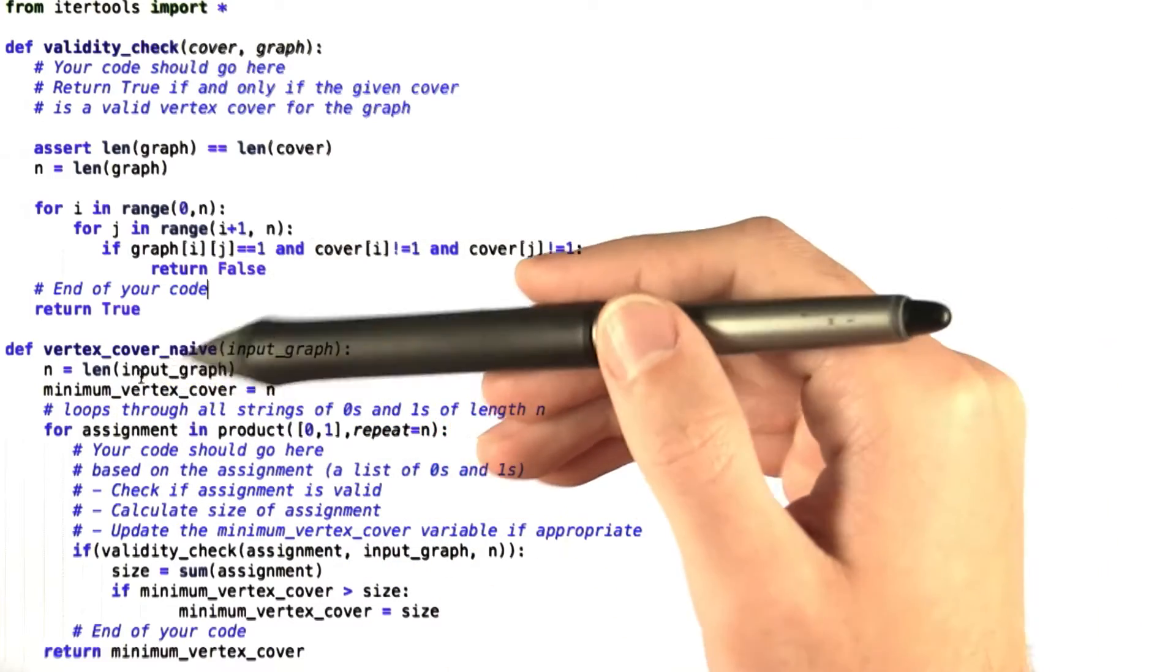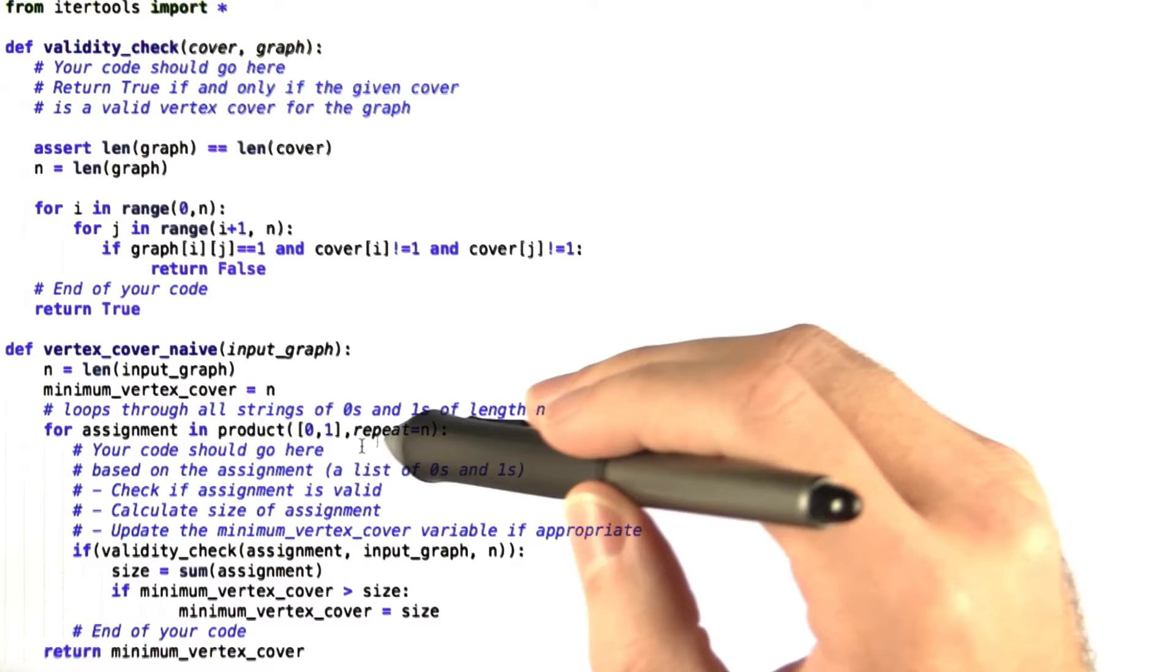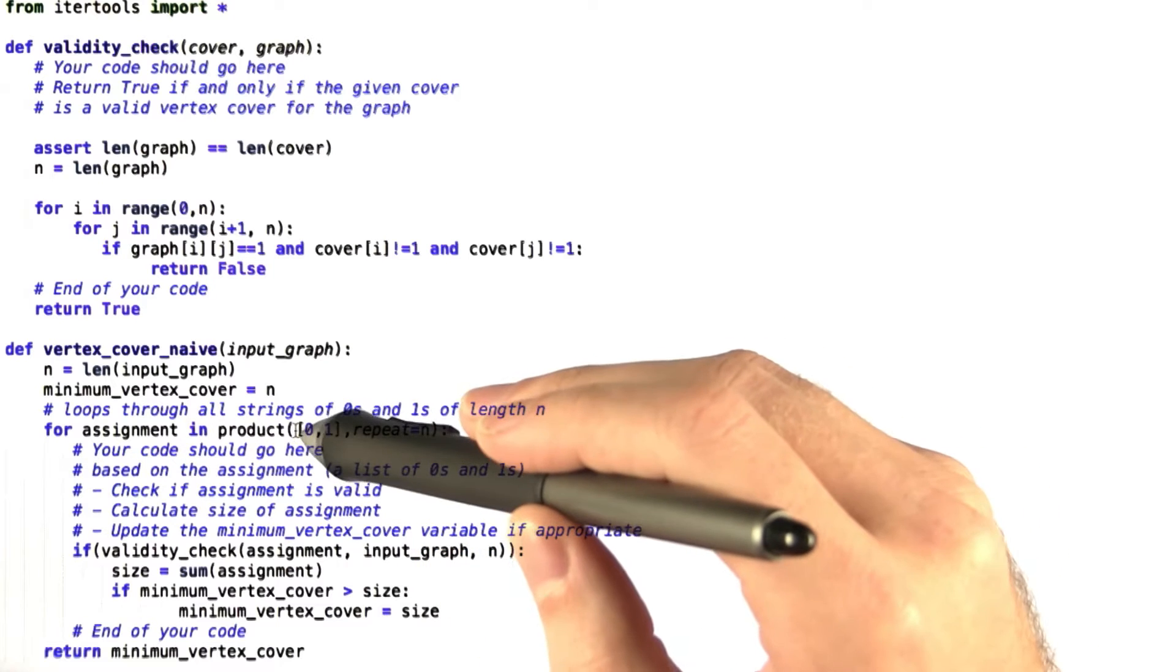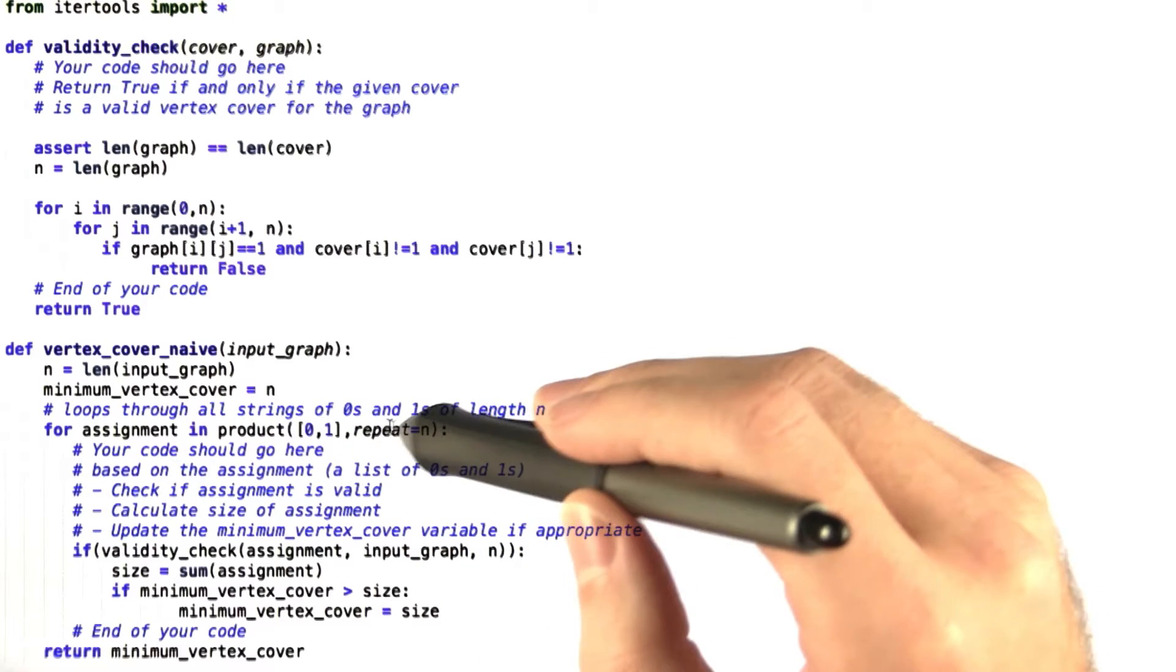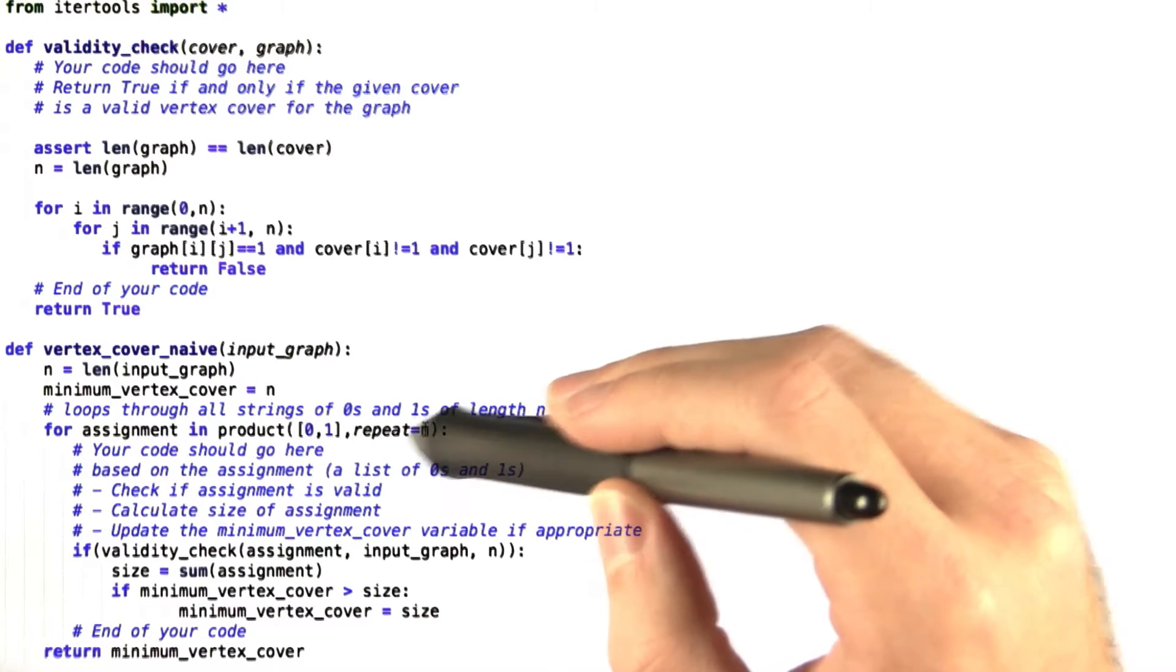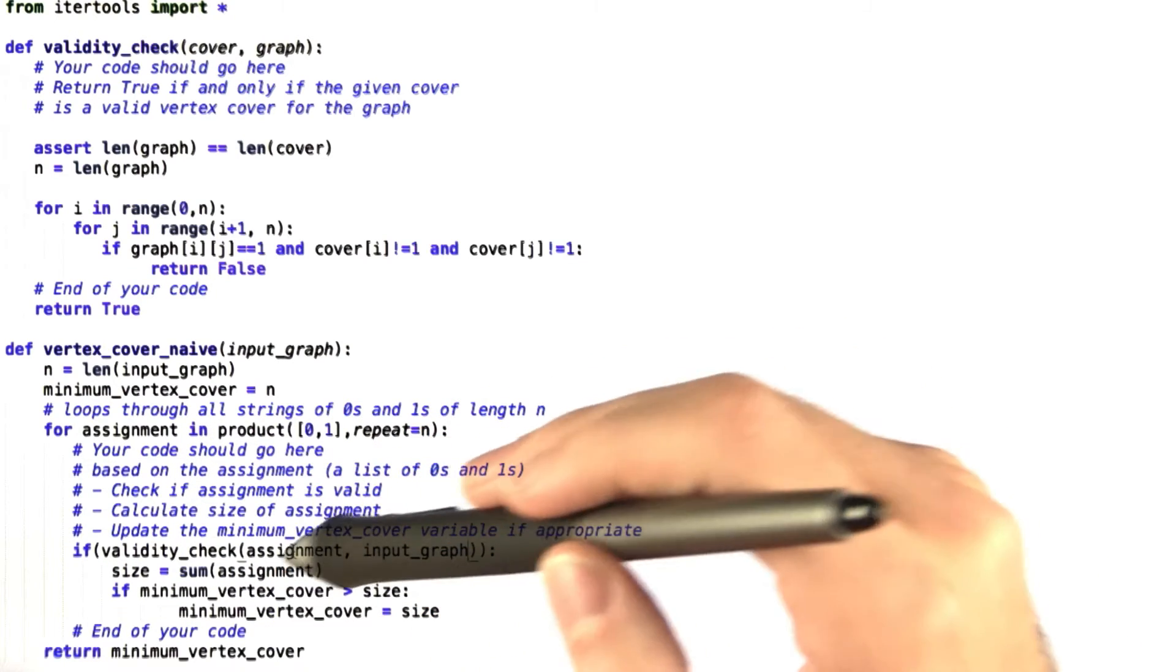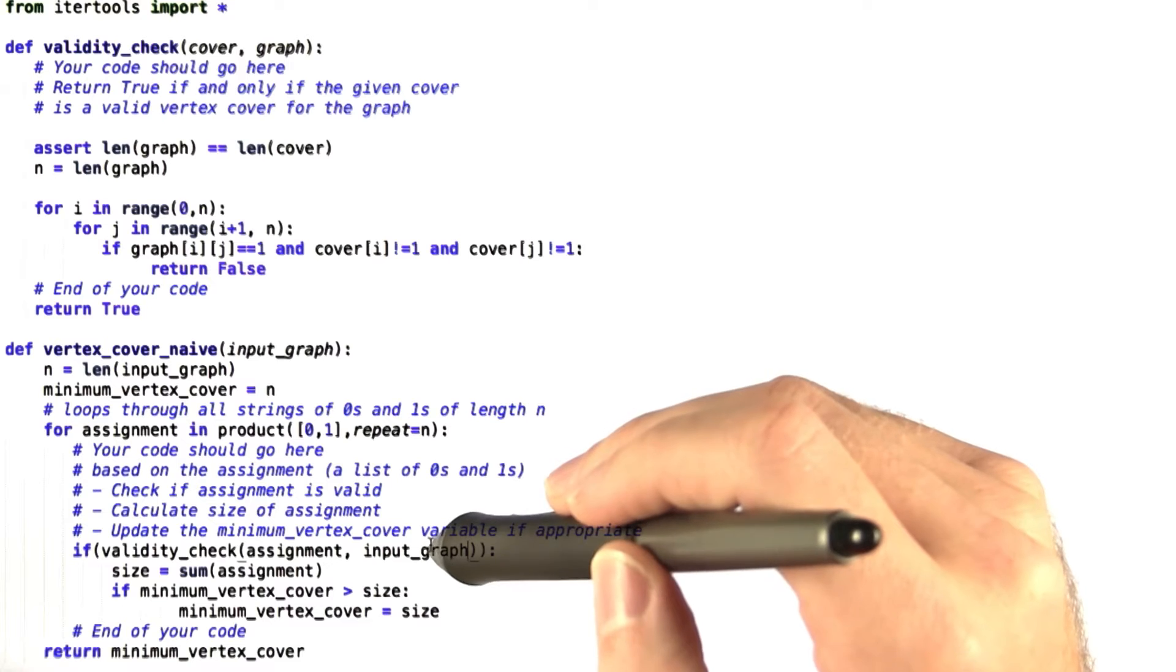Now for the naive vertex cover algorithm, what we do is for every assignment in a product of zeros or ones that is of length n—that's what this product statement does—then if the validity check is true for that assignment and that input graph,